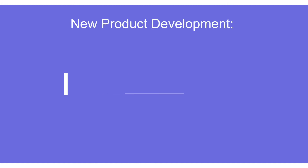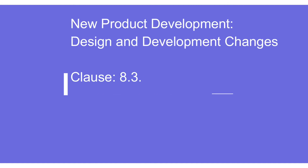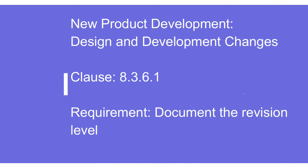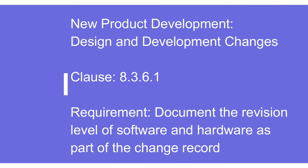Another important aspect is design and development changes. Just like any other change in a product or process, there can be changes in the software as well. It is important to have a proper engineering change process for software — whatever coding is changed, is there a revision number being tracked? That needs to be verified.